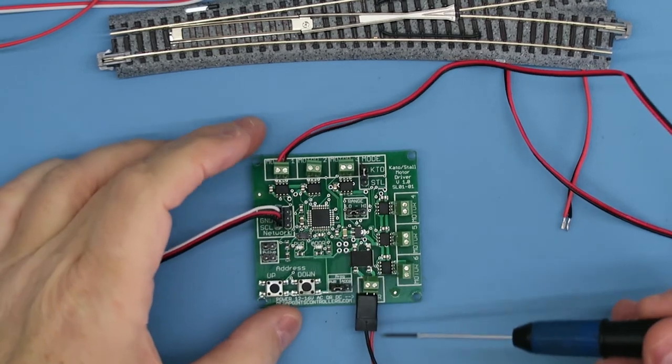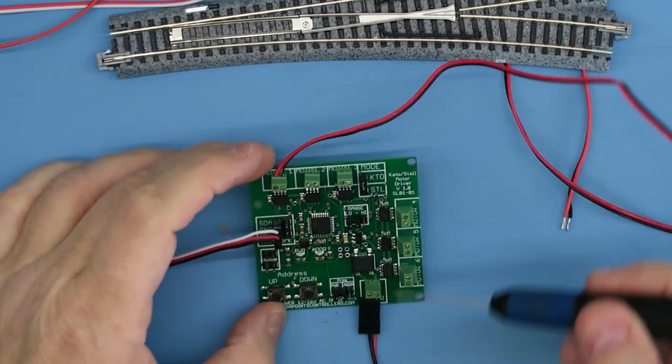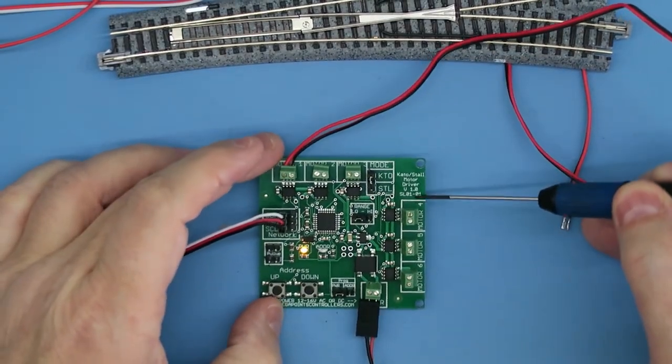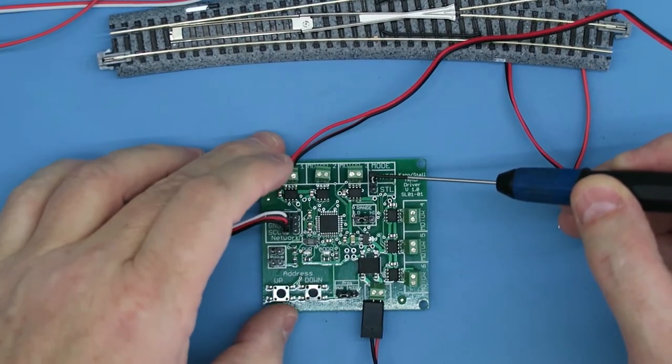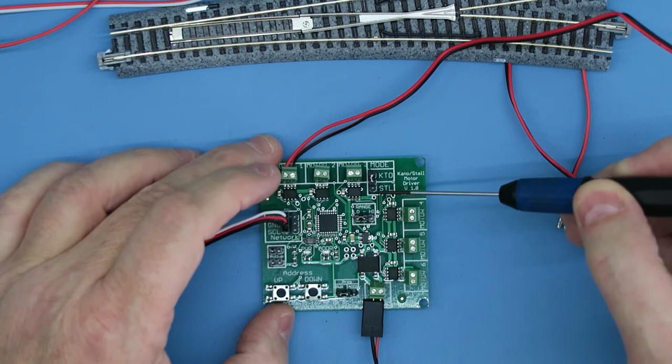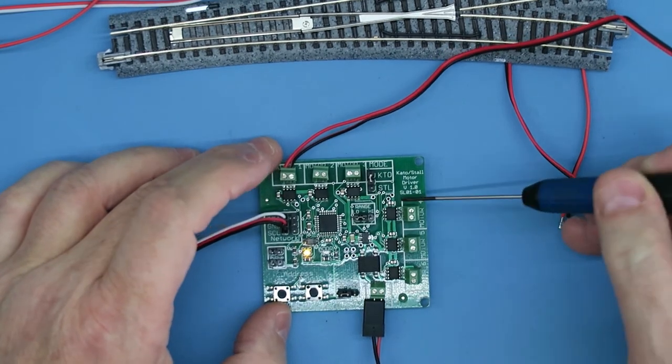So here's the board. This is one of the engineering prototypes. So we've got the Kato stall motor indicator here. This is in the Kato position with the jumper here. This is the stall motor position here. Here's the six outputs.